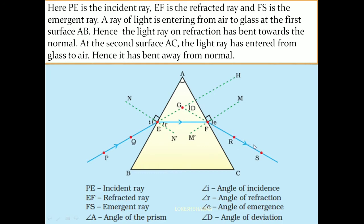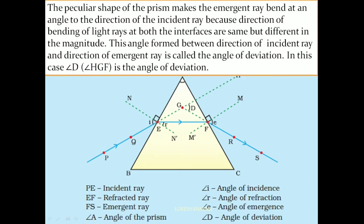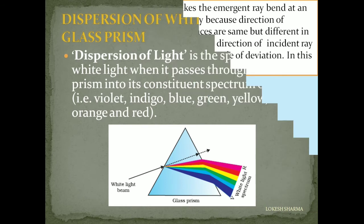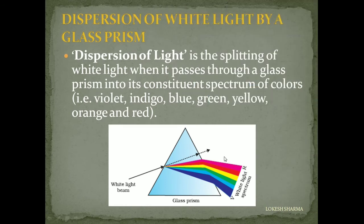At the AC interface — the glass-air interface — when light emerges out, as it is entering the optically rarer medium, it bends away from the normal. Thus the light bends 2 times, but the direction of emergence makes an angle with the direction of propagation of the incident ray, called the angle of deviation. The special geometry of the prism gives rise to splitting of white light into 7 colors — this phenomenon is called dispersion of white light.